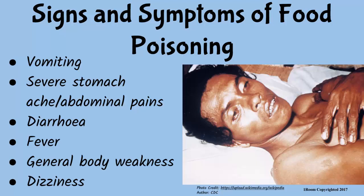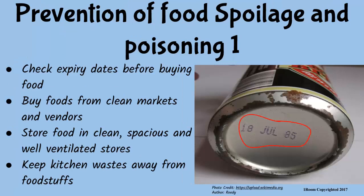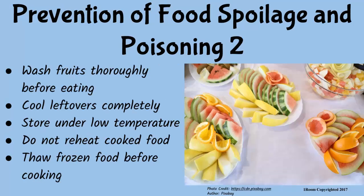To prevent food poisoning: always check the expiry dates of food before buying; buy food from clean markets and vendors; store foods properly to avoid spoilage by ensuring food stores are clean, spacious, and well ventilated; keep kitchen waste away from foods; wash fruits thoroughly before eating; and cool leftovers completely before storing them under low temperatures. Reheating cooked food is not a very good idea.